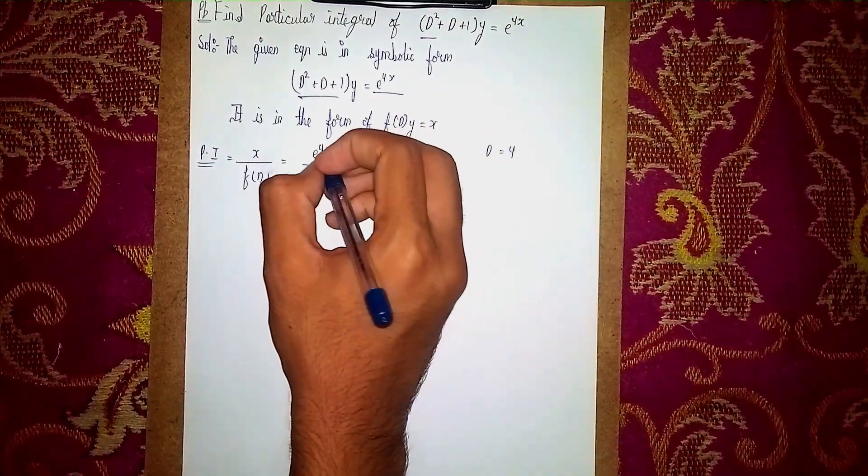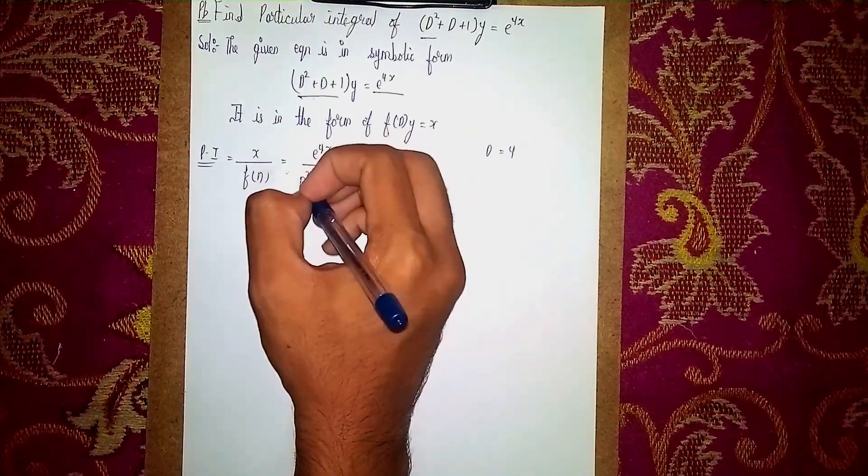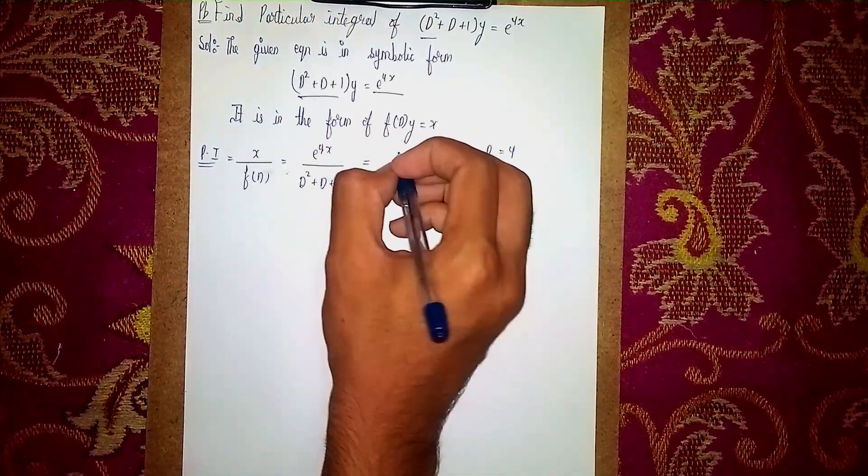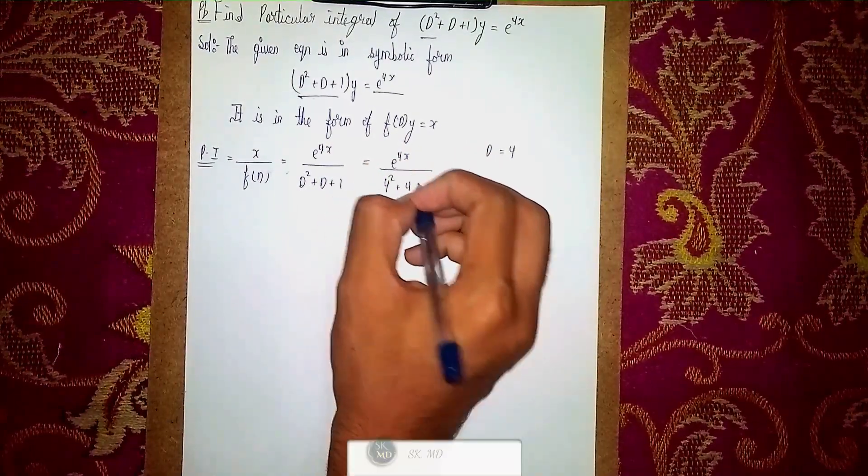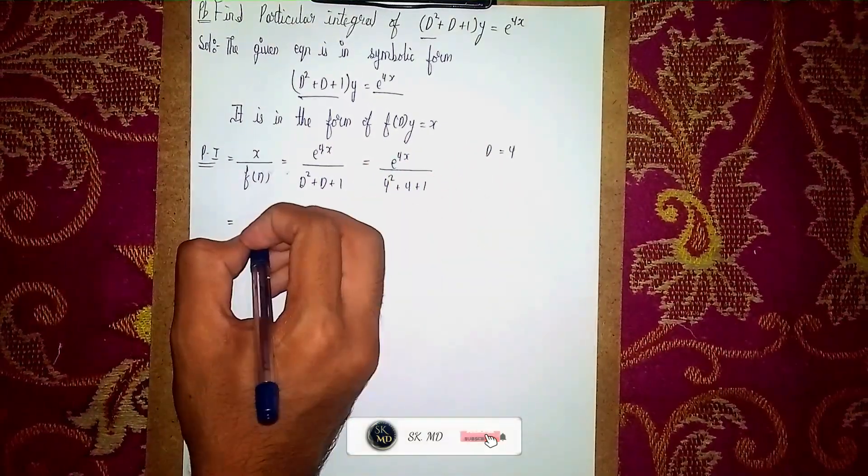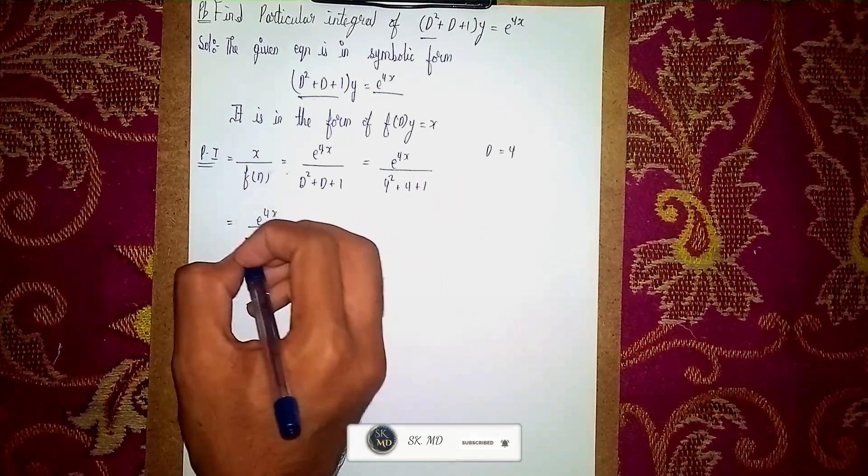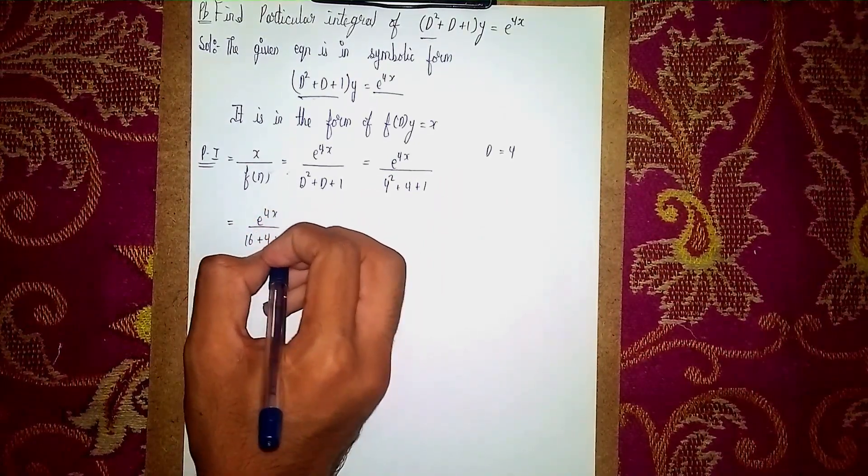Now instead of d, you have to substitute 4. What value is given? You have to substitute here in d. So e power 4x by 4 squared plus 4 plus 1, then we get e power 4x by 16 plus 4 plus 1.